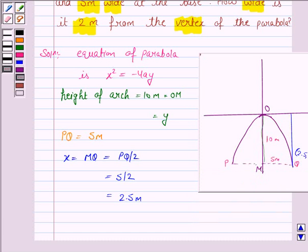Now, we have to find the width when the parabola is 2 meter from the vertex. Here y is 2 meter. To find the width, we first find the value of a.